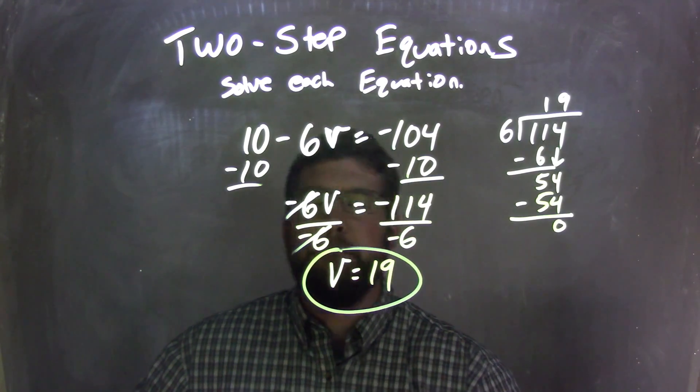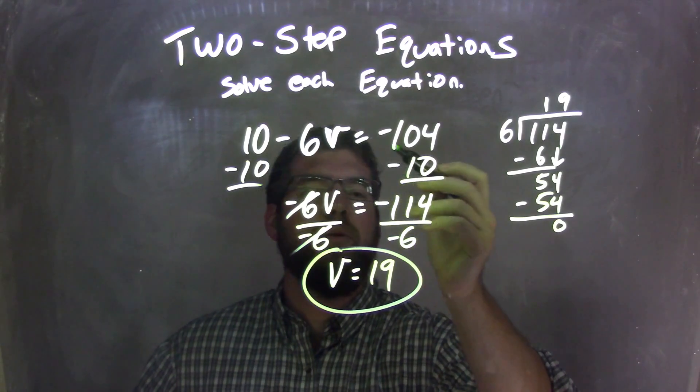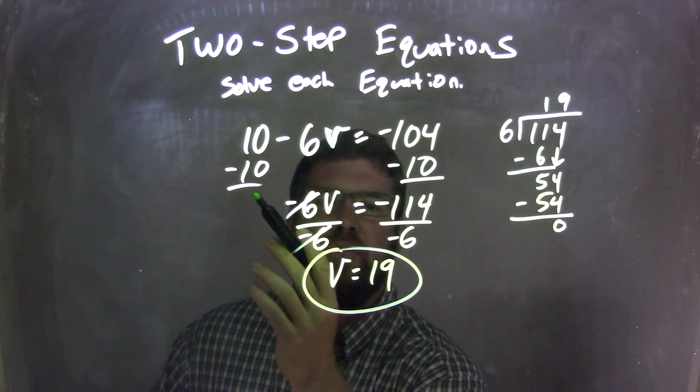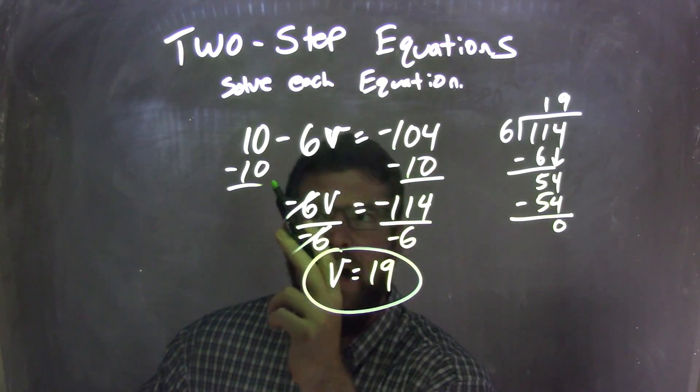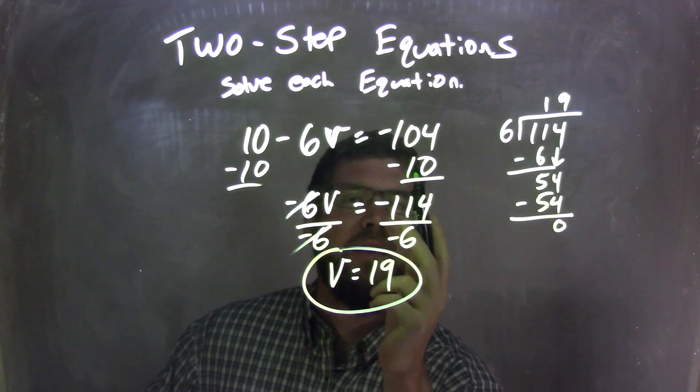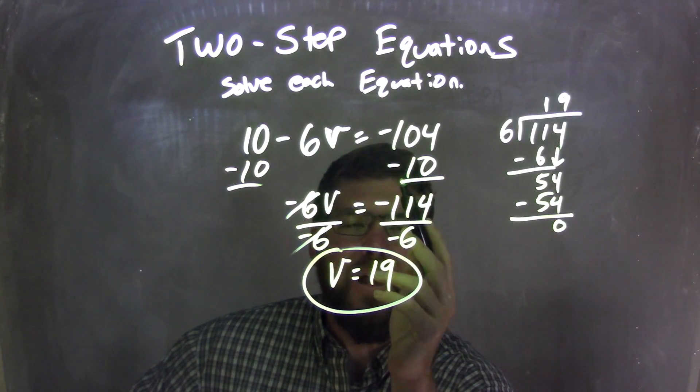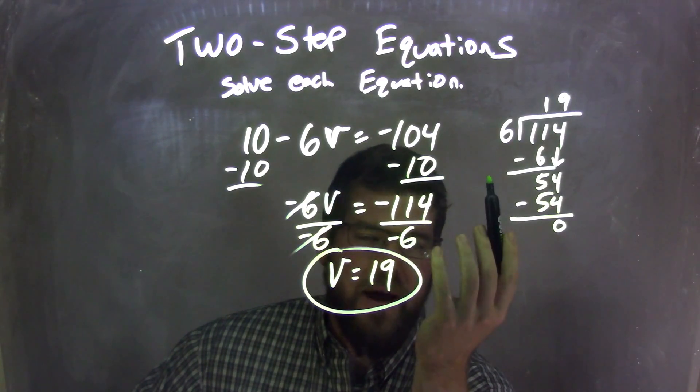So let's recap. We started with 10 minus 6V equals negative 104. I subtracted 10 from both sides. That was the opposite of what was being added there. I got negative 104 plus a negative 10, essentially what minus 10 is.